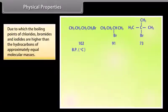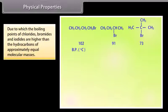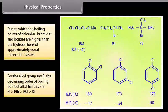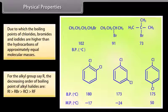Due to which, the boiling points of chlorides, bromides, and iodides are higher than those of hydrocarbons of approximately equal molecular mass. For the same alkyl group R, the decreasing order of boiling points of alkyl halides is: RI has the highest boiling point, followed by RBr, then RCl, then RF.